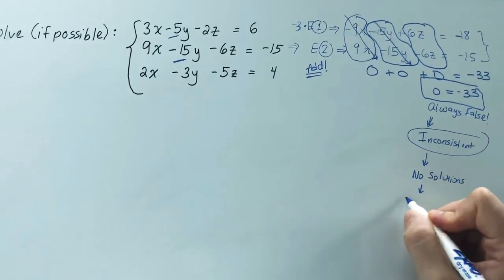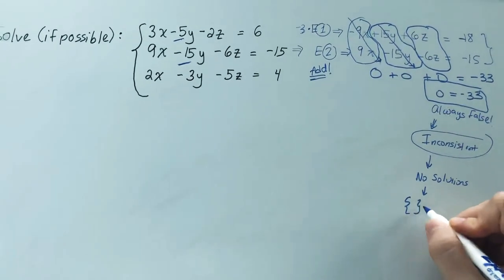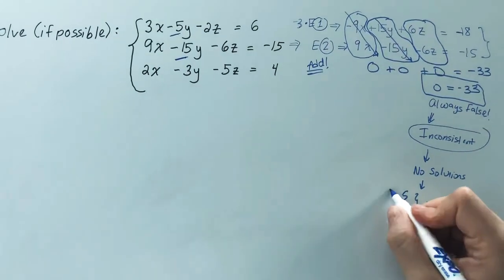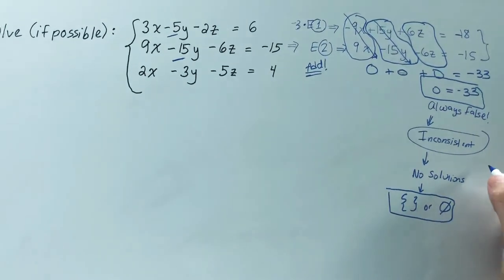So your solution set would be the empty set, which can be written with a set with nothing inside, or it could be written with a circle with a line through it. So either one of these would be your solution set because the system is inconsistent.